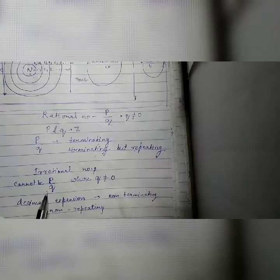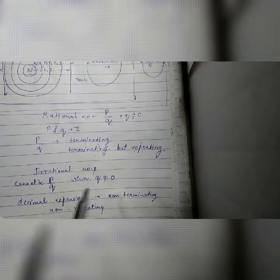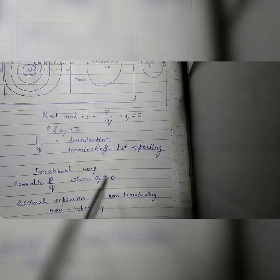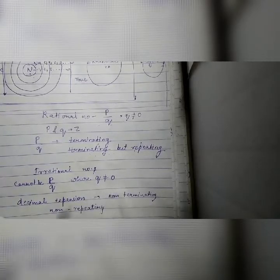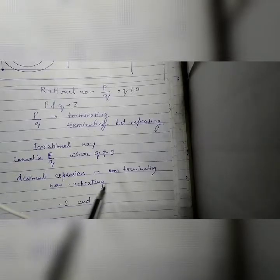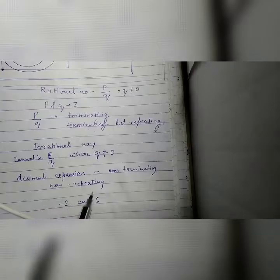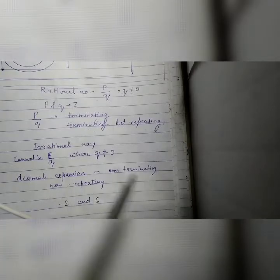Irrational numbers, which we can't write in the form of p by q where q does not equal to 0. Now the irrational numbers, the decimal expansion is non-terminating and non-repeating.